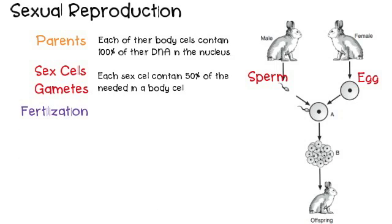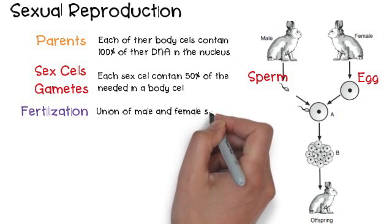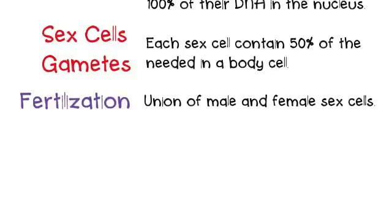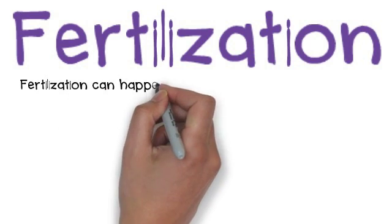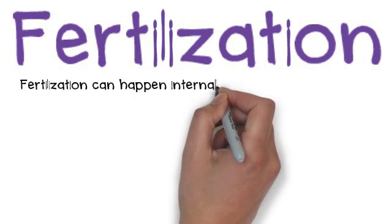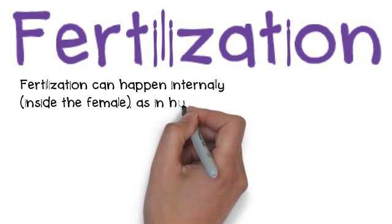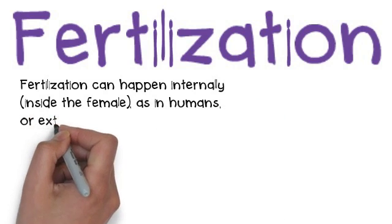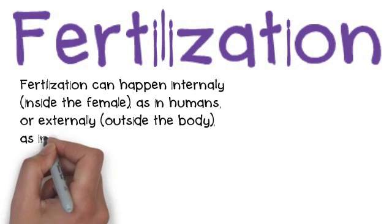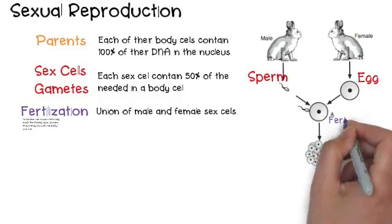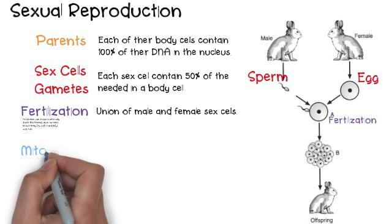When the sperm penetrates the egg, or when the union of the male and female sex cells come together, that is called fertilization. The cool thing about fertilization is that it can happen internally, like inside of the female as in humans, or externally, outside of the body — something like fish or frogs. Here is what fertilization looks like internally and externally: the egg unites with sperm.